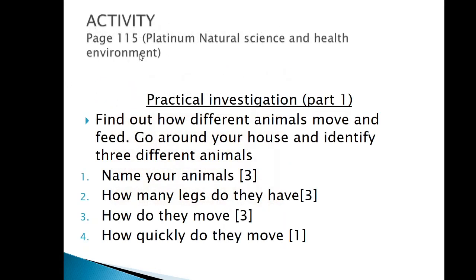The activity for today is found on page 115 in our textbook — the Platinum Natural Science textbook. It is a practical investigation which is divided into two parts. Part one is what you are going to do in this lesson: you are going to find out how different animals move and feed. Go around your house and identify three different animals. In number one, you name your animals. In number two, you tell me how many legs these animals have. In number three, you tell me how they move and how quickly they move.